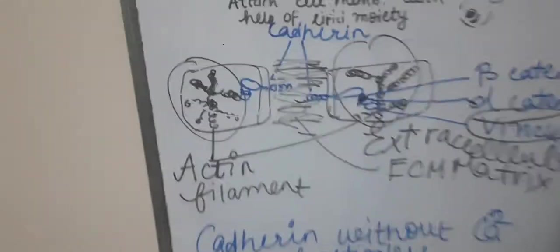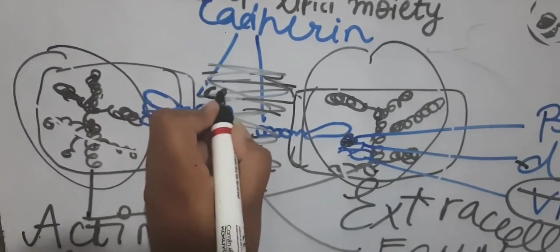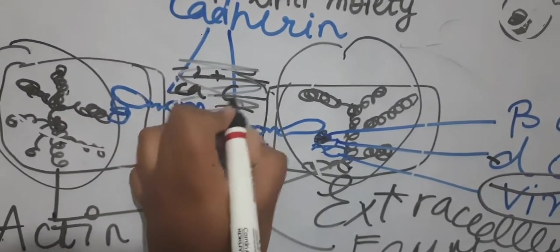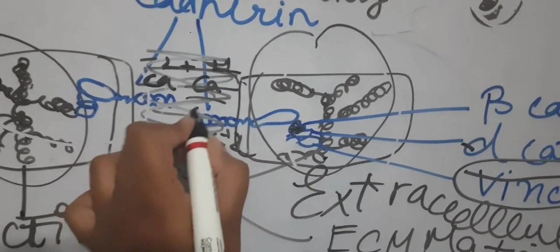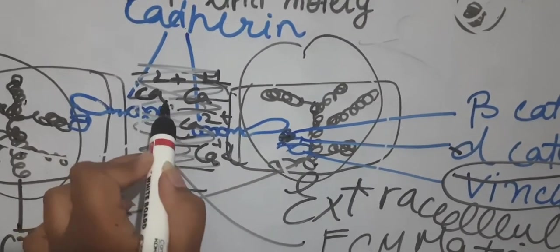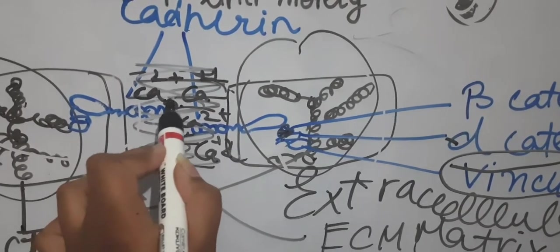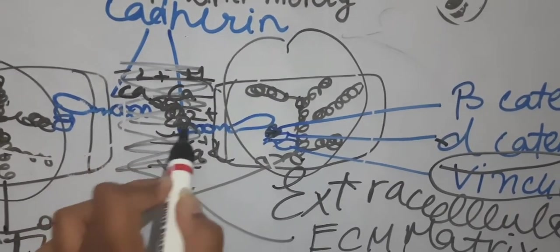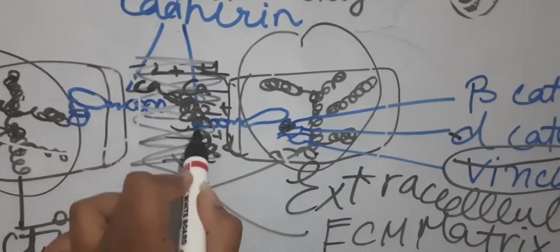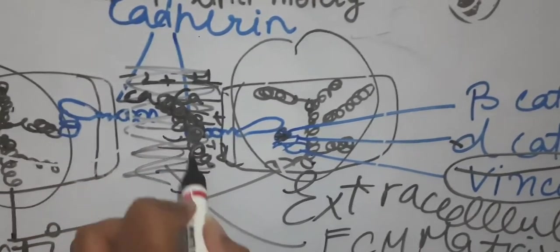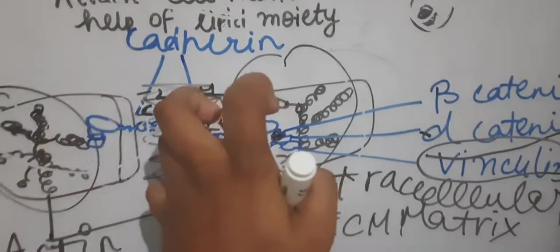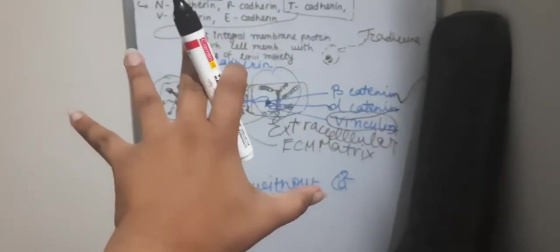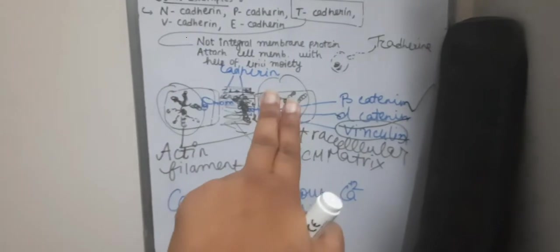Let us see what happens if we add calcium. For say I add here Ca and Ca, I add Ca here and Ca here. Now this calcium will go here and this calcium will go here, and eventually the calcium will attach with the other calcium and they form a bond.